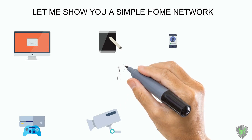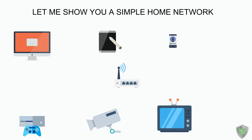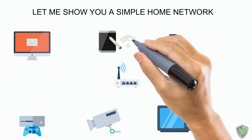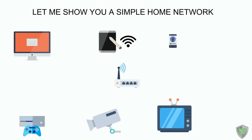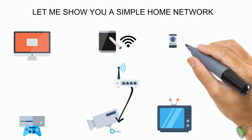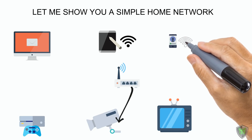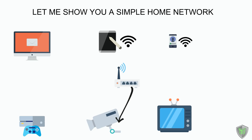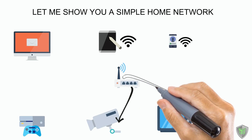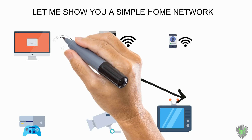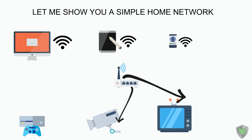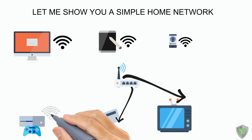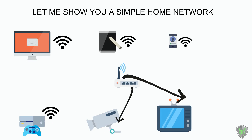So here will be my router. Now my tablet will connect to my router through Wi-Fi. My CCTV camera is connected to my router through a long Ethernet cable. My smartphone is of course connected through Wi-Fi. My router sits near my TV, so I connect my Smart TV to the router with an Ethernet cable. My laptop is connected to the router through Wi-Fi. And my Xbox, which is in my bedroom, is connected to the router through Wi-Fi. Now as you can see, all the devices or nodes are connected to the router and can communicate with each other.